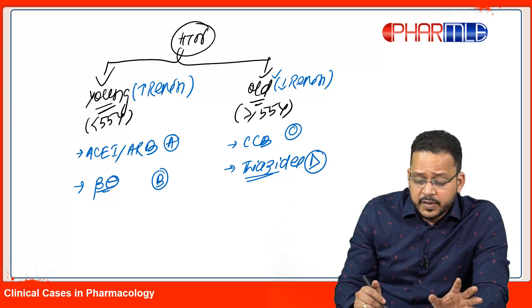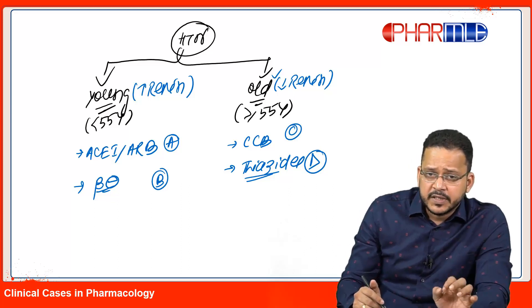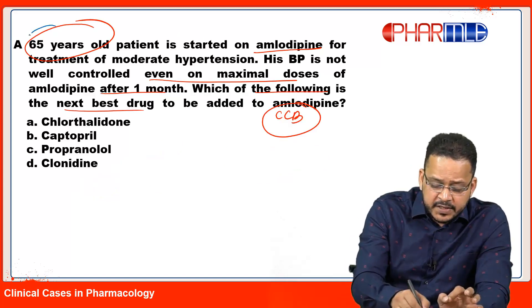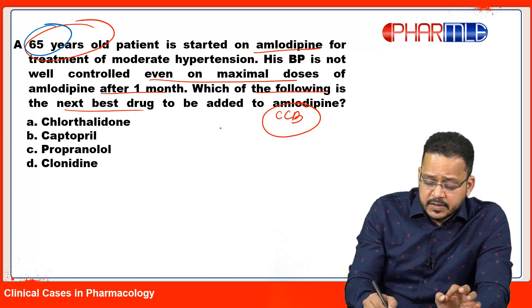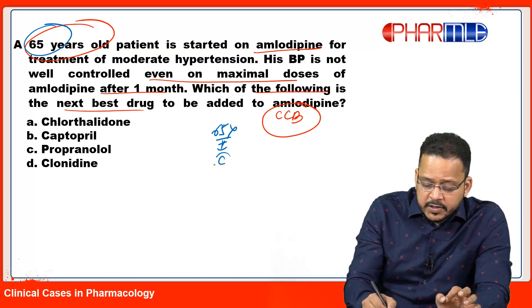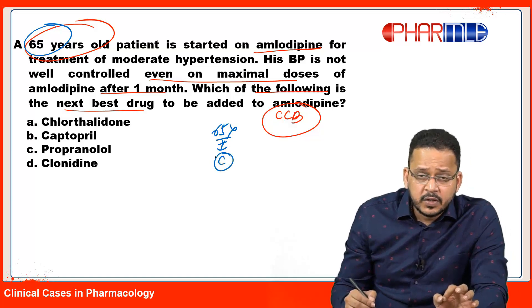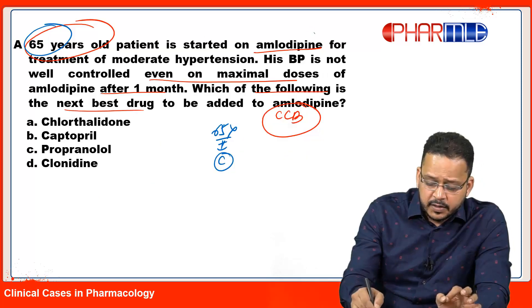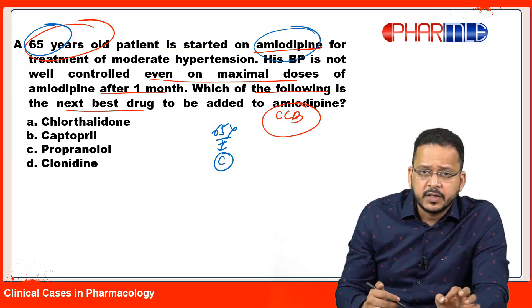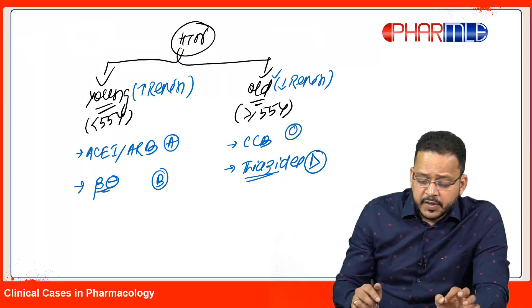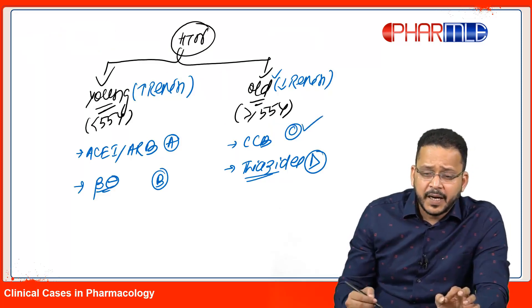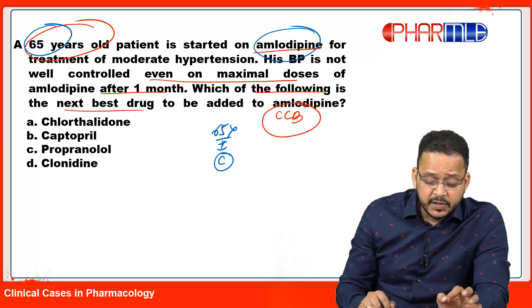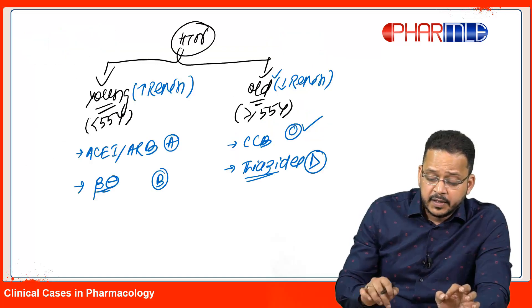So how is it that we progress for treatment of hypertension? In this case, our patient is 65 years old. Since the patient is 65 years, I'll start the patient on which drug? C - that is calcium channel blocker. That is why the question gives you amlodipine was started in the patient. I've started the patient on amlodipine, a calcium channel blocker, and he's not responding. So what is the next drug I'll add - chlorthalidone, captopril, propranolol, or clonidine?